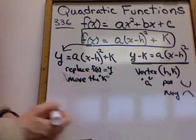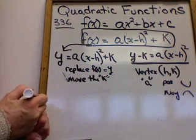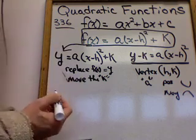So if you want a list of what to do, replace f of x with y, and then move the k. Those are the two steps. Once you do that, graphing is easy. All right? Let me do an example.